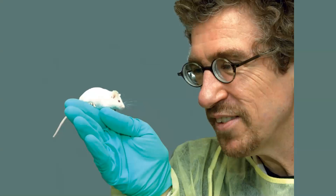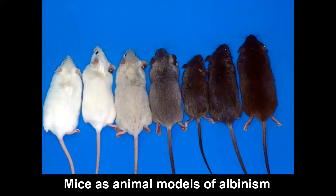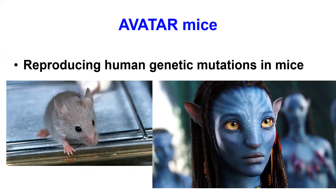We have been using animal models for many years to investigate albinism, particularly mice. We have been creating different types of genetically modified mice — transgenic and mutant mice — that have been instrumental to investigate and understand different types of albinism, particularly the most common type in Europe, which is OCA1, oculocutaneous albinism type 1. With CRISPR we can do things we couldn't do before: we can now reproduce exactly the same human genetic mutations found in our patients and transfer them into mice.